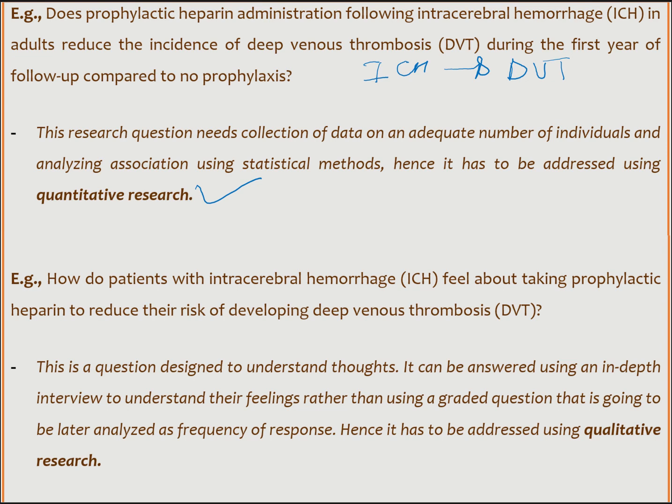The other example is: for a similar patient, if we're interested in asking 'How do patients with ICH feel about taking prophylactic heparin to reduce their risk of developing DVT?' — this is about feeling and their perspective of the management approach. It's from their individual experience that we're interested in understanding the problem. This is clearly a qualitative research question; it's not something we measure, rather something they can express using words, and it has to be addressed using qualitative research.